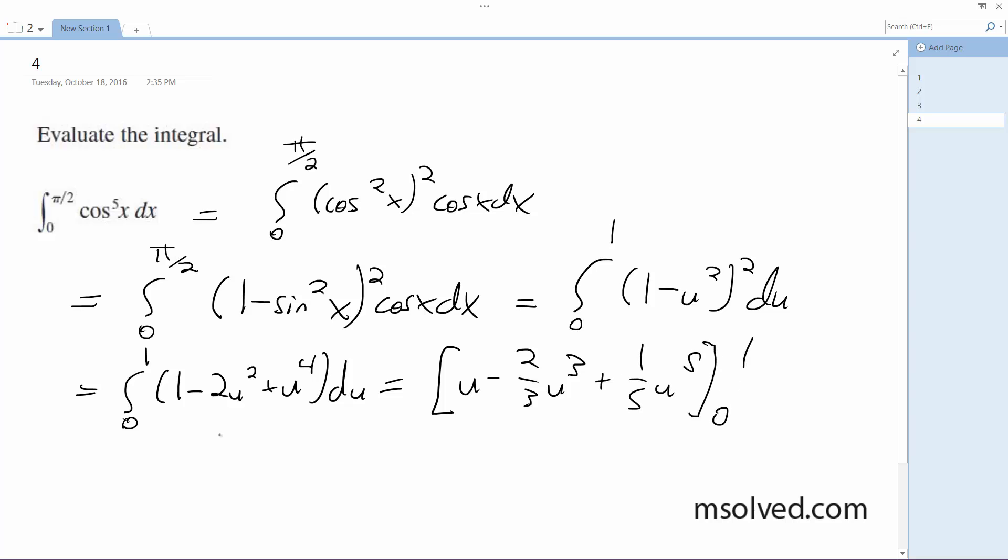Evaluate from 0 to 1. What we end up with is 1 minus 2 thirds plus 1 fifth minus 0 is equal to 8 fifteenths. That's it.